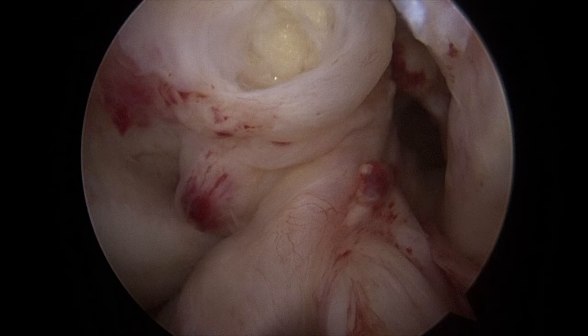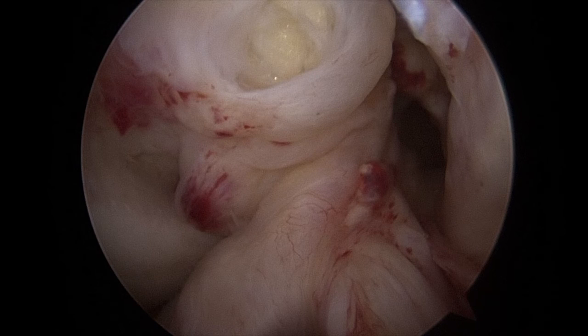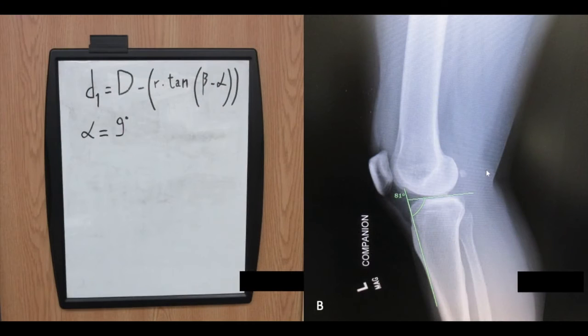This is a 45-year-old female with a complete tear of her anterior cruciate ligament. We draw our formula for the safe drilling length on the whiteboard, then measure the posterior tibial slope on the preoperative lateral x-ray. In this case, it measures 9 degrees.